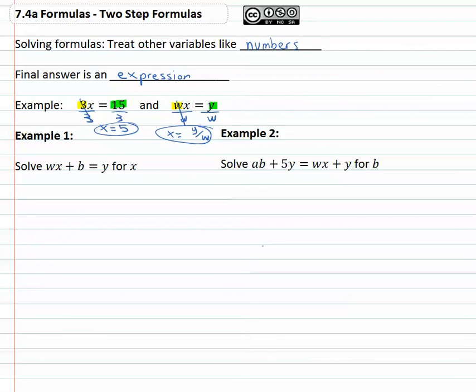So for example, if we're given the equation wx + b = y, and we want to solve this for x. You could think about as if the w and the b were numbers, how would you get the x alone? This is a two step equation.